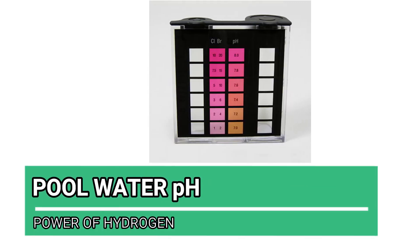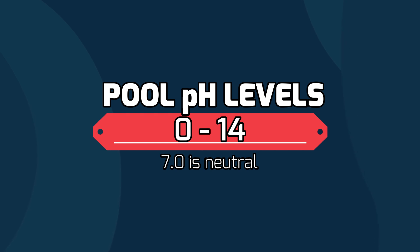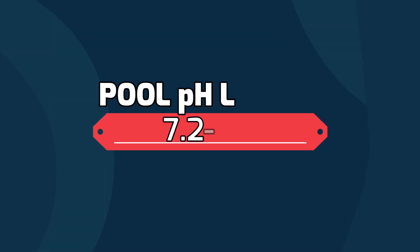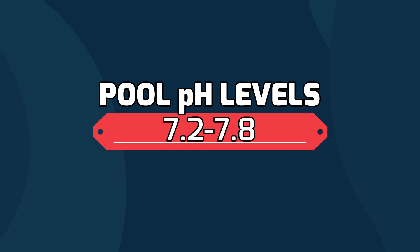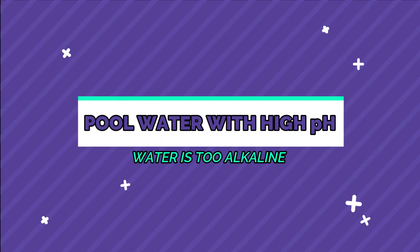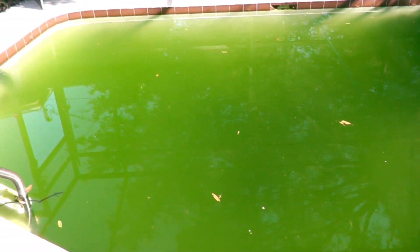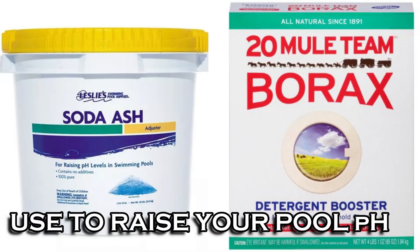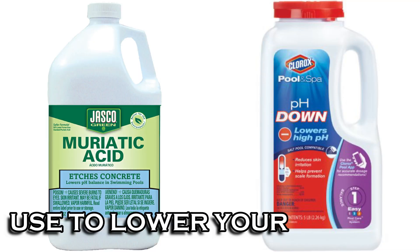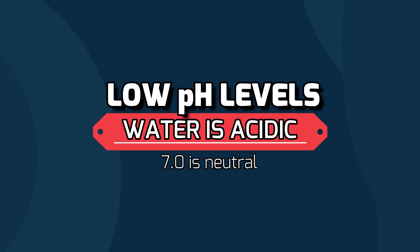Next is our pH, or power of hydrogen. pH ranges from zero to 14, with 7.0 being neutral. Proper pool pH levels are between 7.2 and 7.8. If the pH gets higher than 8.0, the water is becoming too alkaline, which reduces the effectiveness of the chlorine — and that's also dependent on the CYA or stabilizer level, which we'll talk about in just a minute. We can raise the pH using soda ash or 20-mule team borax, and we lower it using muriatic or dry acid.